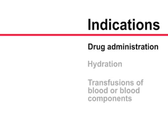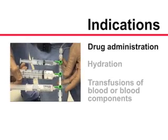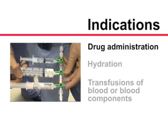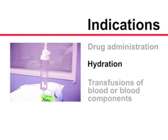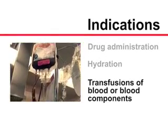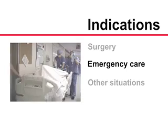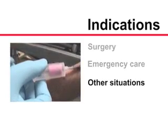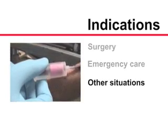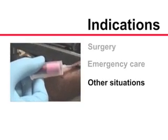Peripheral intravenous catheterization is required in a broad range of clinical applications, including intravenous drug administration, intravenous hydration, transfusions of blood or blood components, during surgery, during emergency care, and in other situations in which direct access to the bloodstream is needed.